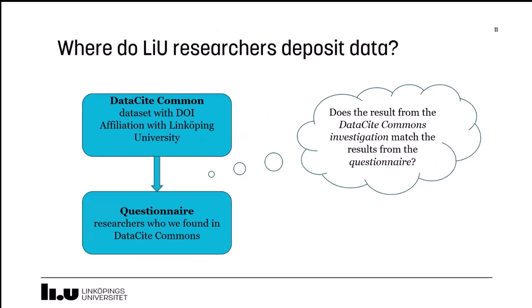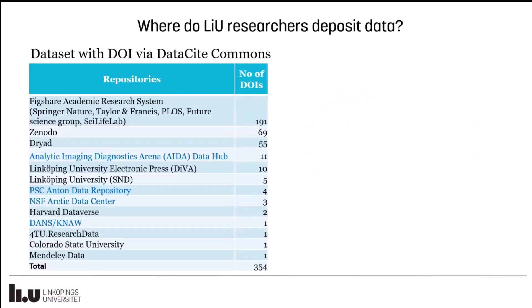Before sending the questionnaire, we investigated how many datasets with LIU affiliation are found through the dataset search engine Datasette Commons. Datasette Commons only retrieves research data with DOIs from DOI agencies across data sites, and we also limited the data type to dataset. Here is the result of the investigation: Figshare has the largest number of DOIs, followed by Zenodo and Dryad.